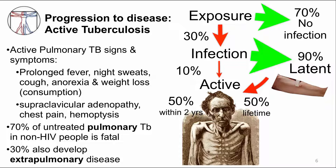People with active pulmonary TB disease usually have symptoms and signs of cough, prolonged fever, night sweats, anorexia, and weight loss. An old name for tuberculosis was consumption, referring to the weight loss. Chest pain, hemoptysis, and supraclavicular adenopathies are signs and symptoms that occur less often.